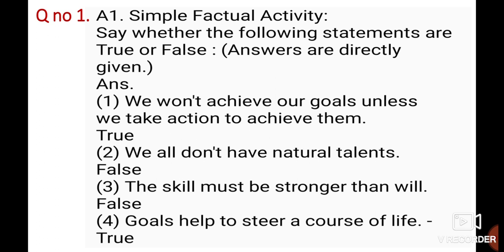Second statement: 'We all don't have natural talents.' We all do have natural talent, so this is FALSE. Third statement: 'The skill must be stronger than will.' This is also FALSE — it should be the opposite: the will must be stronger than the skill.